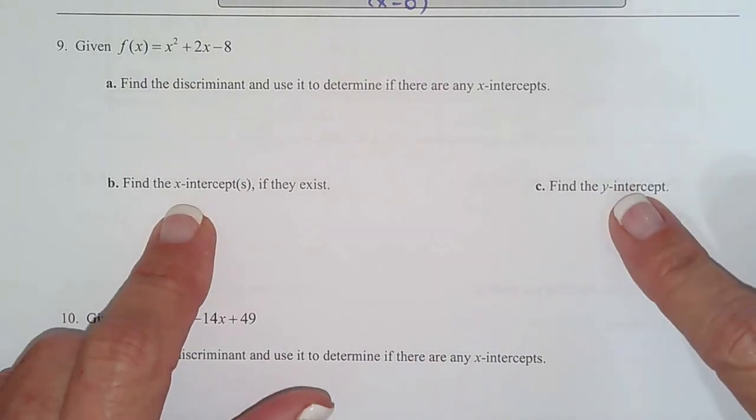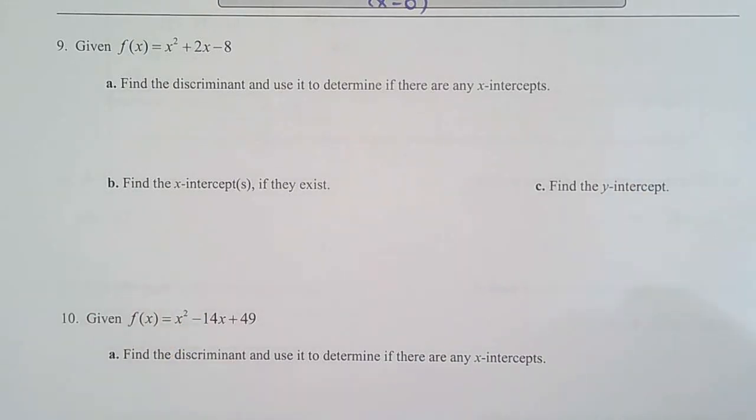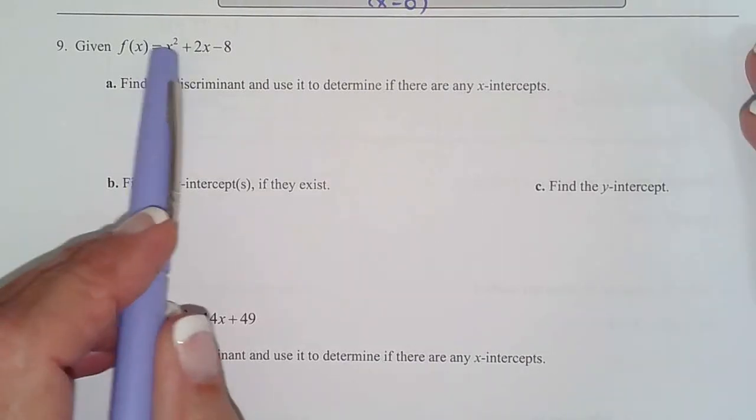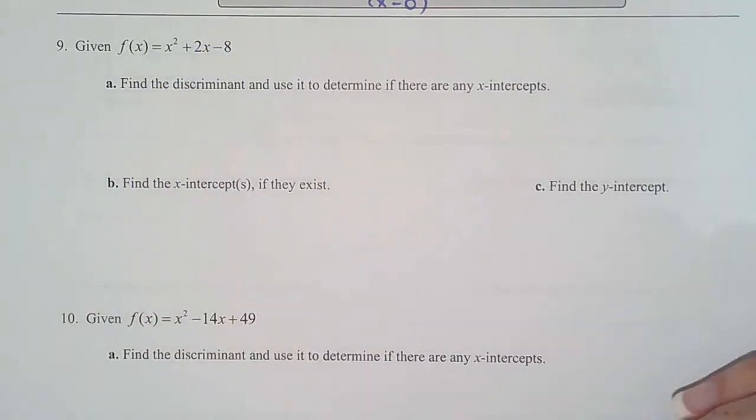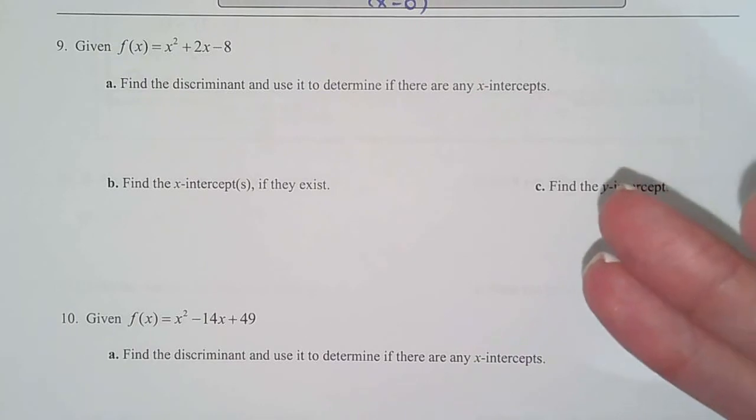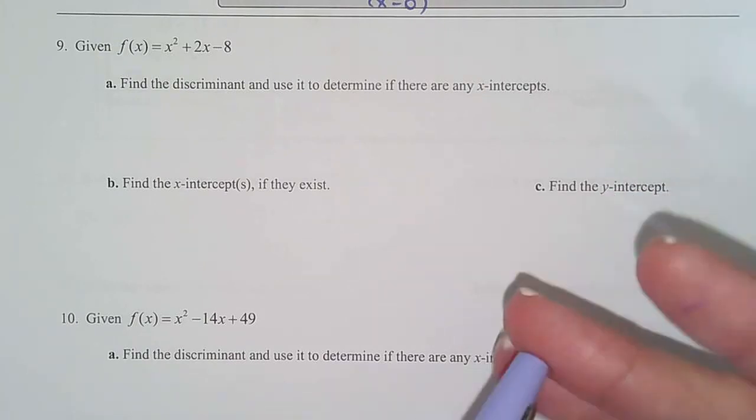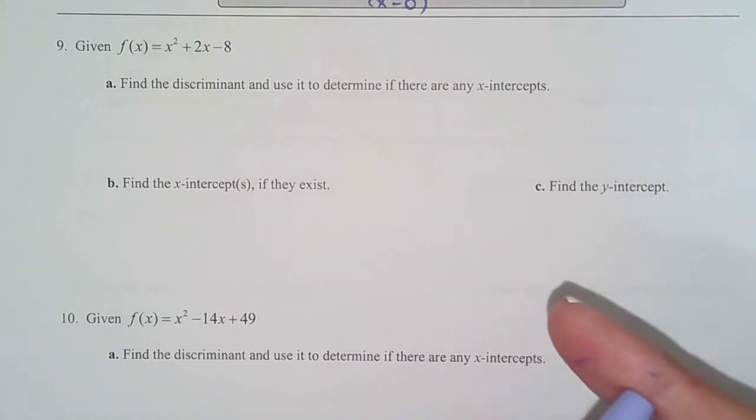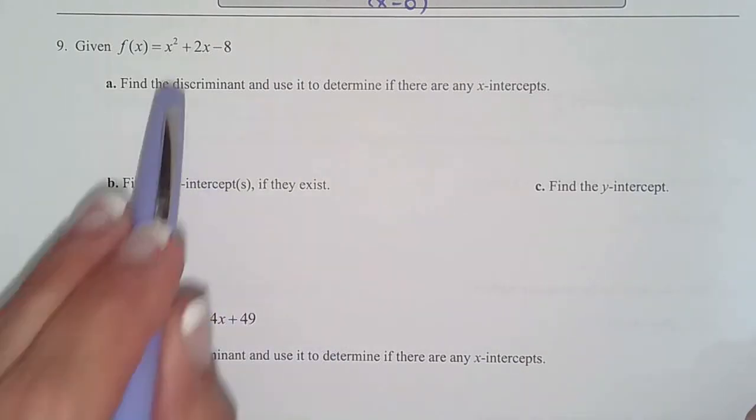And then it also has the graph on the test. So they're two big ten pointers because that's really what our whole class is about: trying to find the x-intercepts. That means solving a quadratic equation, which we know how to do by factoring, quadratic formula, completing the square, square root property. So we're going to use all those to help us find the x-intercepts.